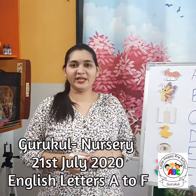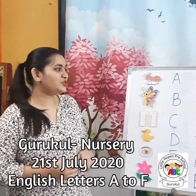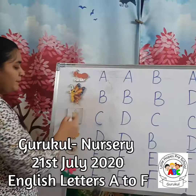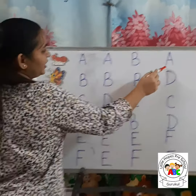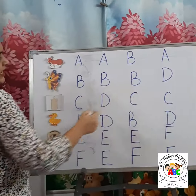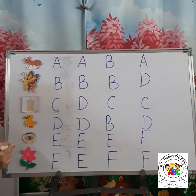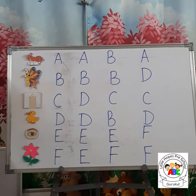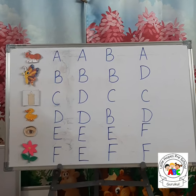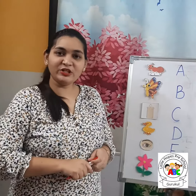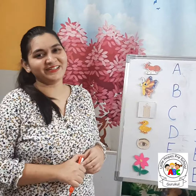Letters. Letter A to F. As you can see here, there are some pictures given and there are some uppercase, or you can say capital letters. We are going to cross out the wrong one. Let's start our today's activity by crossing out the wrong letter.